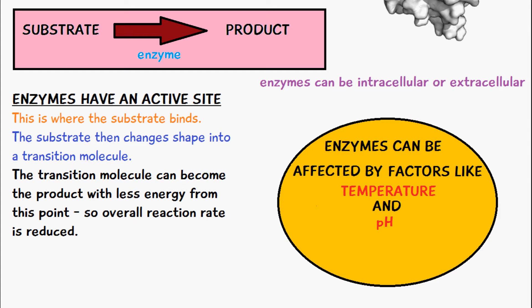At a certain point the optimum temperature is exceeded. In humans, above 40 degrees, the enzyme structure does tend to break down, and once this happens the enzyme is basically destroyed. This is where we say the active site of the enzyme is denatured, so the substrate is basically no longer able to fit. This happens because the thermal energy from the high temperatures causes the hydrogen bonds inside the protein structure — because enzymes are proteins — to break down, resulting in the overall denatured structure of the enzyme.